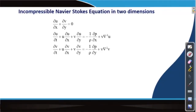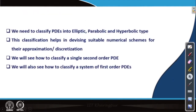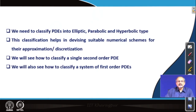We now look at how to classify a system of partial differential equations. When we classify, we recall the terms elliptic, parabolic, and hyperbolic. We need to know, when looking at a partial differential equation, which kind it is. This classification is very important to establish before we try to approximate the PDE and solve it numerically, because the discretization applied depends on the kind of PDE being handled.